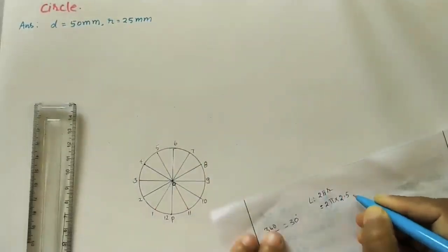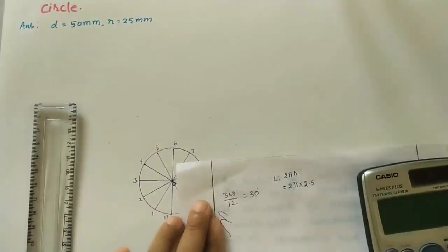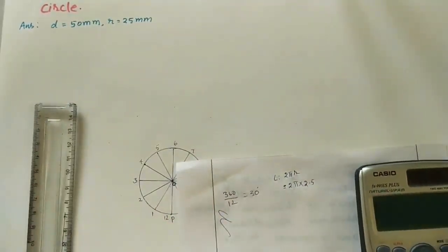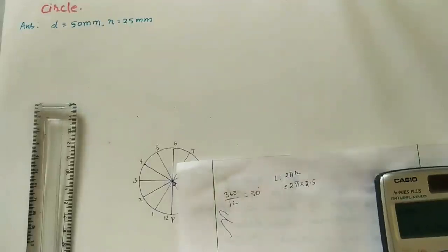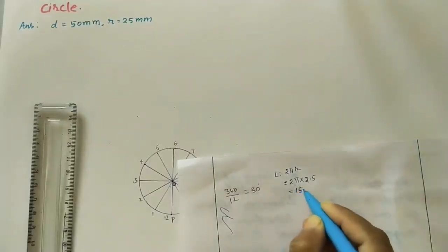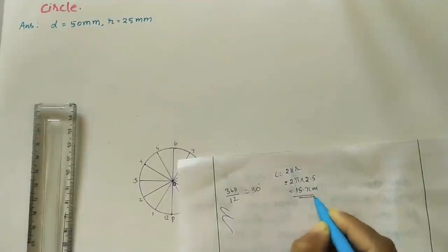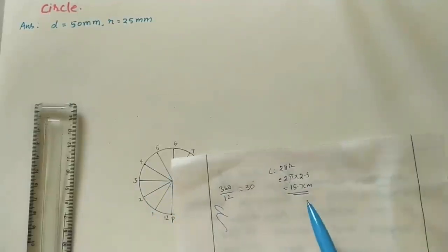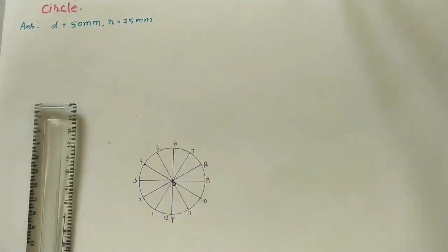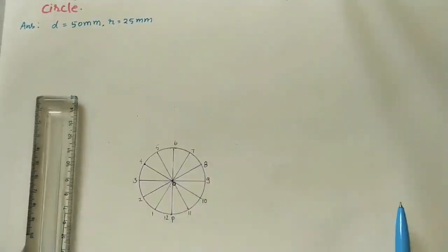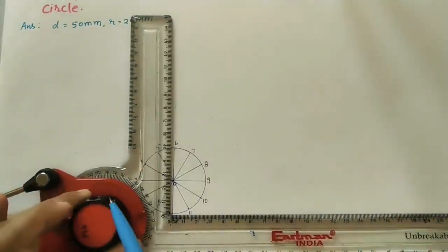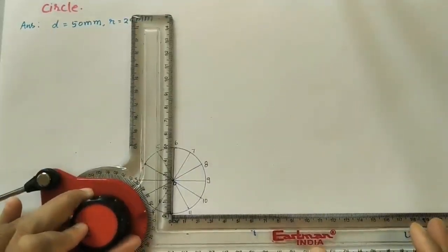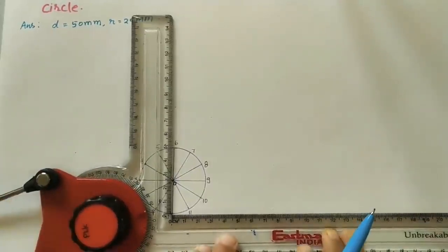At P, do the peripheral length of this circle. The formula is 2πr. Here, 2 into π into 2.5 centimeters gives us 15.7 centimeters. So this is the length of the periphery — 15.7 centimeters. At P point, draw a horizontal line of 15.7 centimeters.